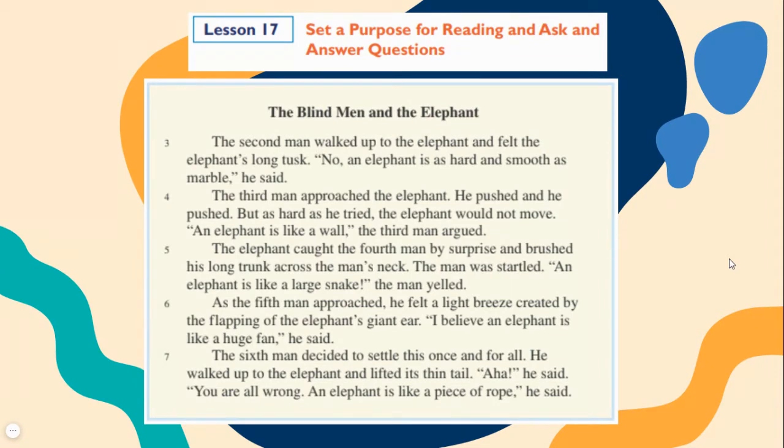The elephant caught the fourth man by surprise and brushed his long trunk across the man's neck. The man was startled. An elephant is like a large snake, the man yelled.